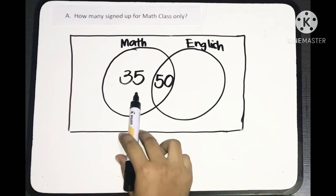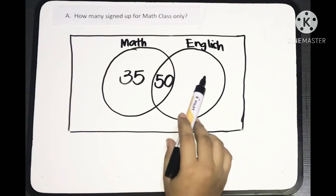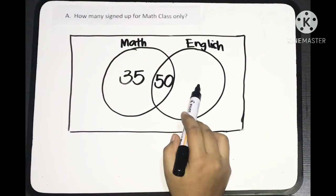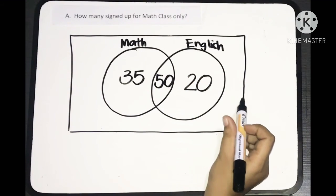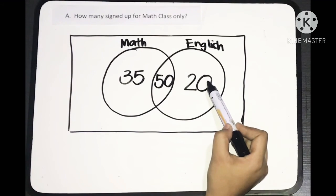So, the same thing goes for the English class. It is said that there are 70 who registered for English class. So, we'll just subtract 50 from 70. We'll have 20, meaning there are 20 who registered for English only.